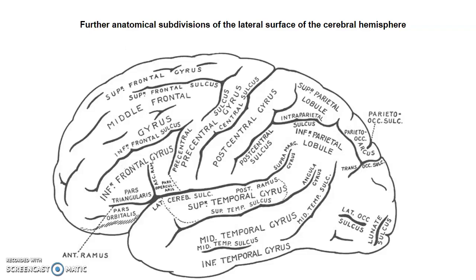This diagram illustrates the different gyri and sulci of the brain. Within the frontal lobe, we have the superior frontal gyrus, middle frontal gyrus, and inferior frontal gyrus. The inferior frontal gyrus has three parts: pars orbitalis, pars triangularis, and pars opercularis. Pars triangularis and opercularis form what we call Broca's area, which we shall discuss. The frontal lobe is separated from the parietal lobe by the central sulcus. The remaining part of the parietal lobe is divided into an inferior parietal lobe and a superior parietal lobe. The inferior parietal lobe has the angular gyrus and the supramarginal gyrus.